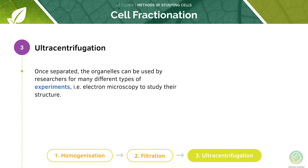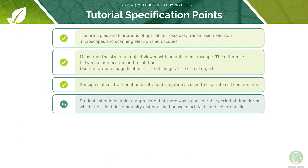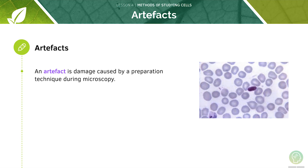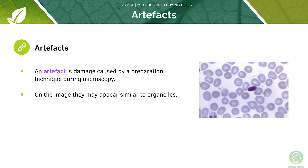The organelles left at the end will be the heaviest. Once separated, the organelles can be used by researchers for many different types of experiments, such as electron microscopy, to study their structure. Our final specification point is to look at the importance of artefacts and organelles. An artefact is damage caused by a preparation technique during microscopy; on the image they may appear similar to the organelles.